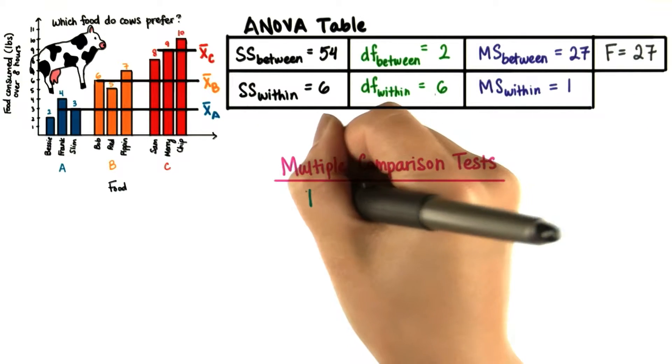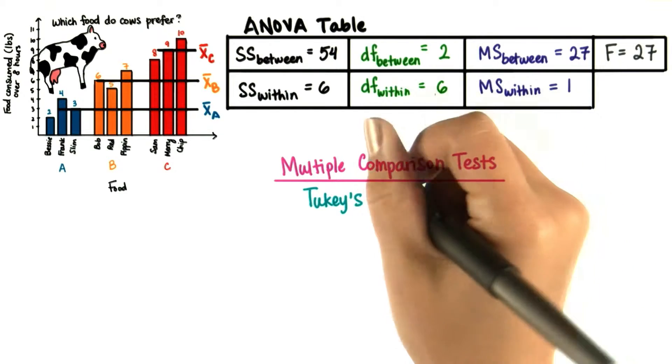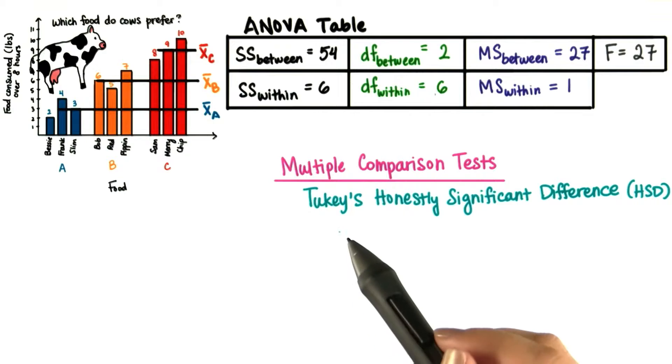One of the most common multiple comparison tests is called Tukey's HSD, which stands for Honestly Significant Difference. It's named after John Tukey, a very influential statistician.